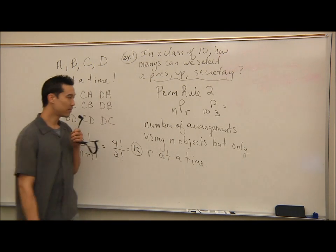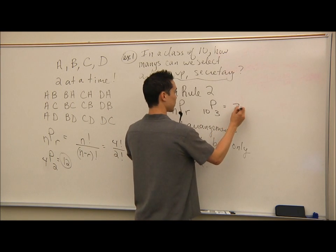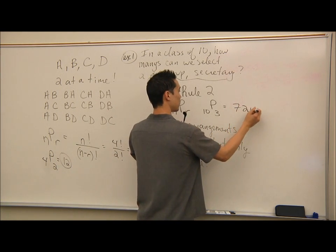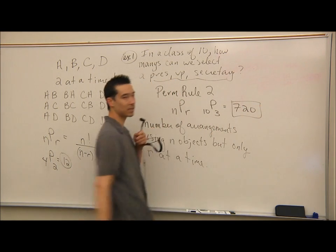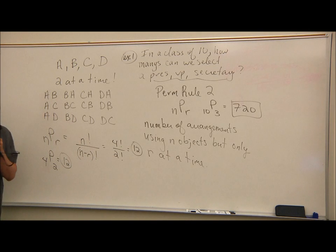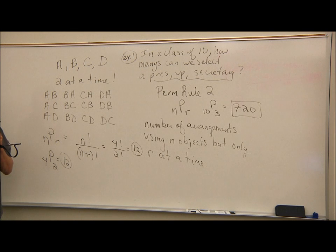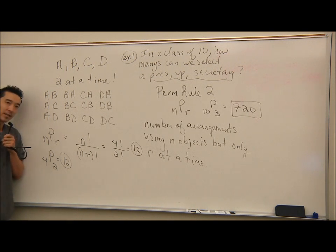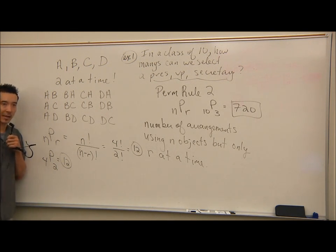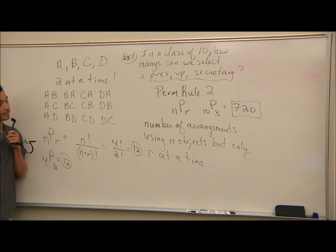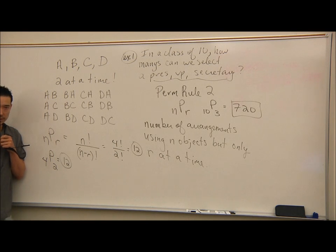The answer is 720. So there are 720 different ways to select a president, vice president, and secretary from a class of 10 students. That's permutation rule number 2.